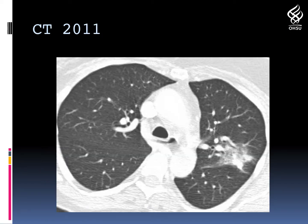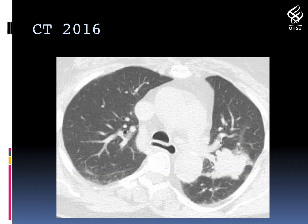Here's the initial CT. We can see a left upper lobe mass, predominantly ground glass, with irregular shaped margins. In 2016, that very same mass had become much more dense. The margins had become much more nodular and lobular, and this was, in fact, an invasive adenocarcinoma.